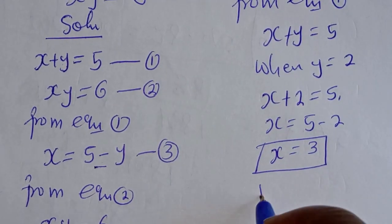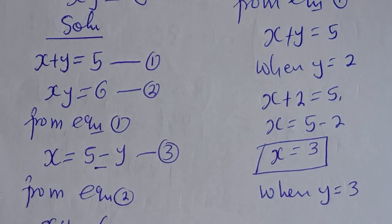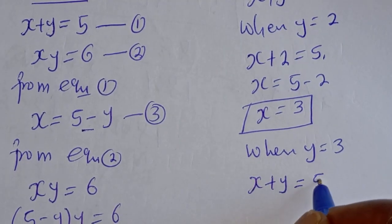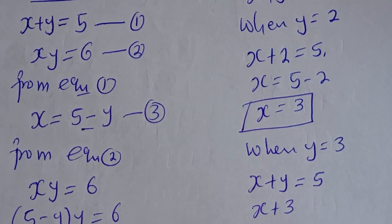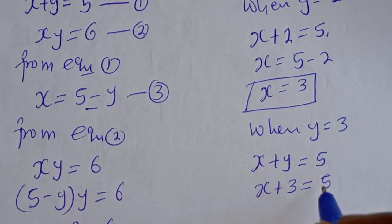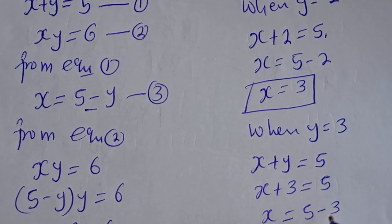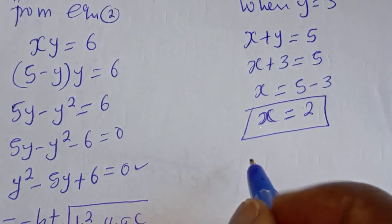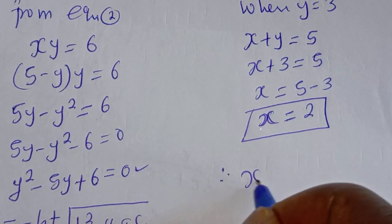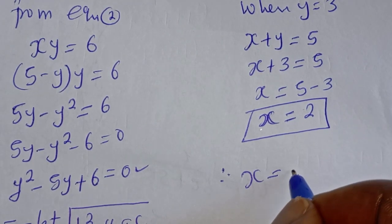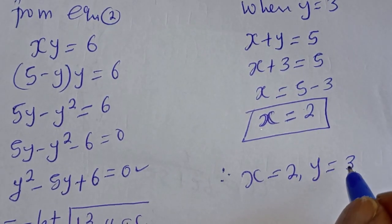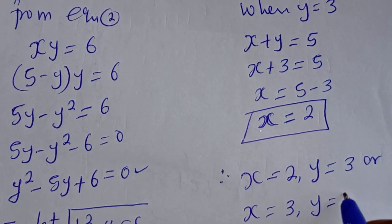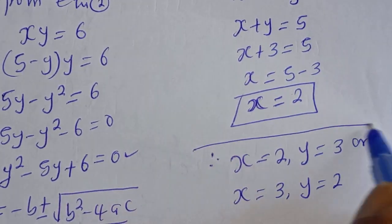Then when Y is equal to 3, we have S plus Y is equal to 5, so S plus 3 is equal to 5, giving S is equal to 5 minus 3, therefore S is equal to 2. Therefore our final answers are: S is equal to 2 and Y is equal to 3, or S is equal to 3 and Y is equal to 2. This is the final answer.